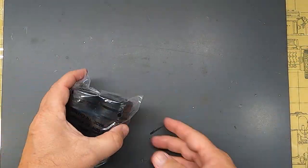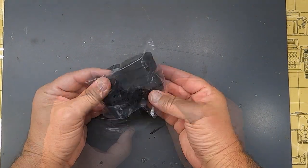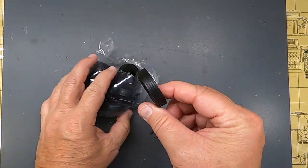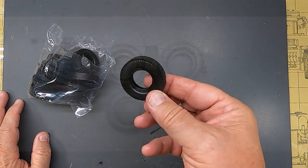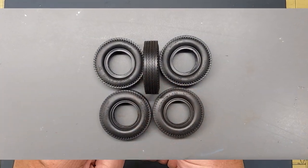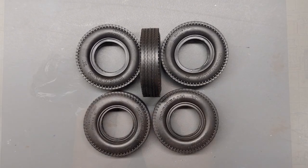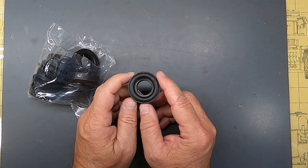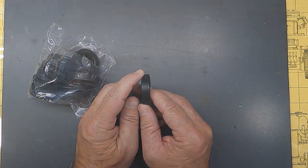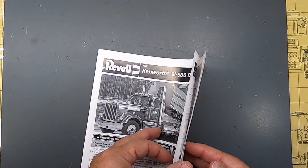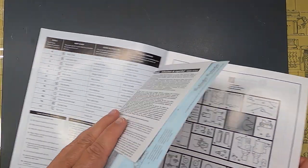We got the tires. And they're all the same. Same Michelin. Look good. And we got the instructions and decals. Let's see what the decal sheet looks like.